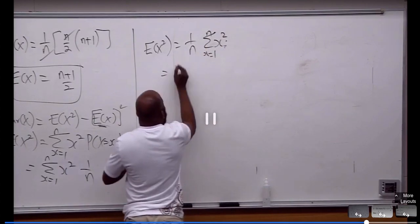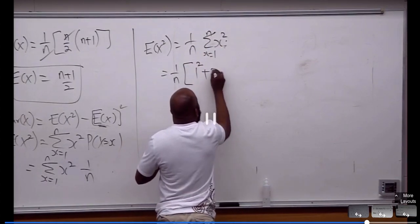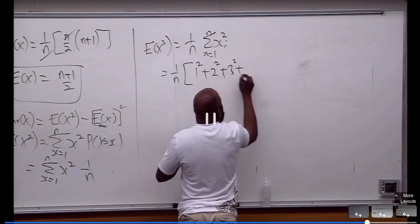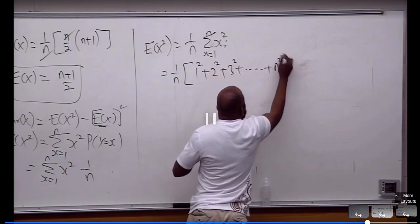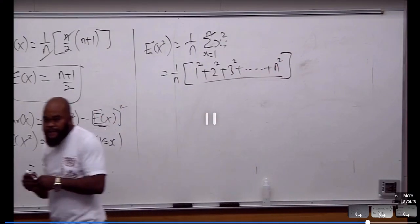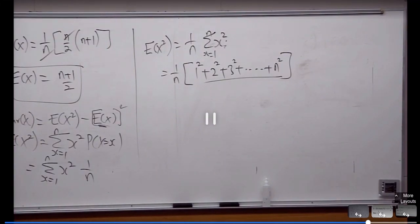1 over N. 1 squared, 2 squared, 3 squared, up to N squared. That's another formula. The sum of squared of natural numbers.